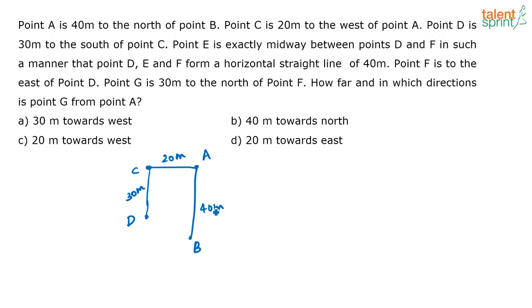Point E is exactly midway between point D and F in such a manner that point D, E and F form a horizontal straight line. So basically point D, E, F they are forming a straight line. D can be here, E can be here, F can be here or D can be here, E can be here, F can be here. They are saying E is in between D and F.